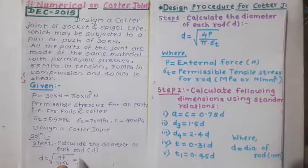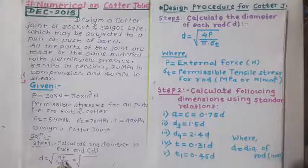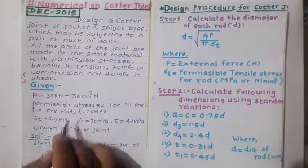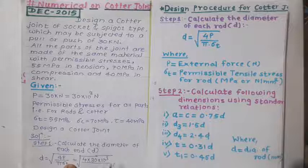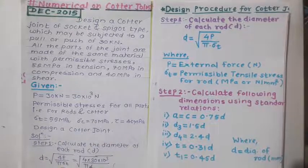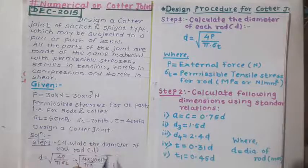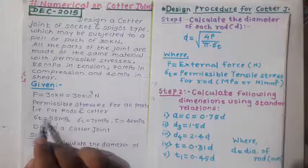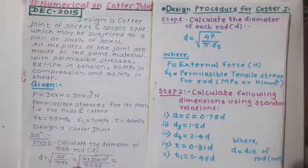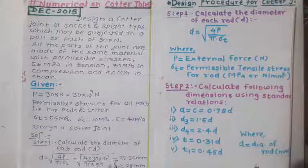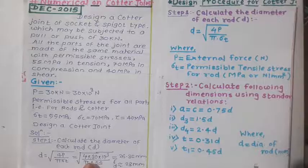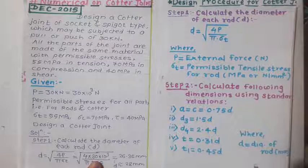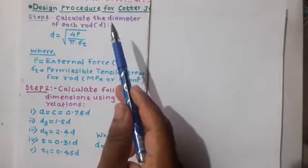Putting in the values: d = √(4 × 30 × 10³ / π × 55). Calculating this gives 26.35 mm. Rounding up, the diameter of the rod is d = 28 mm.